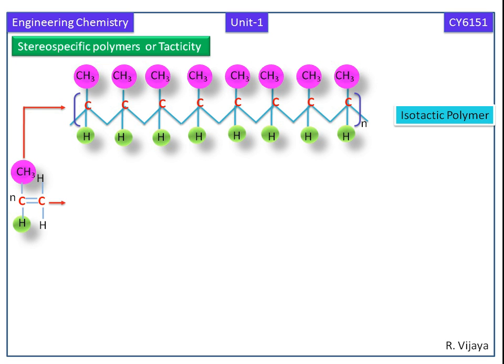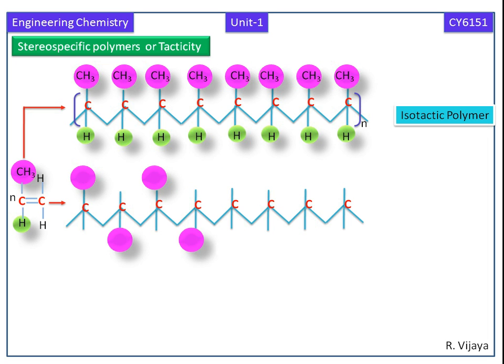The next one is syndiotactic polymer. This is the backbone of the polymer. If the functional groups are arranged in an alternating fashion in the polymer chain, it is called syndiotactic polymer.